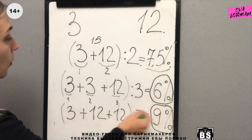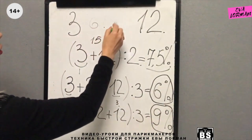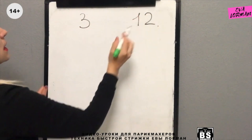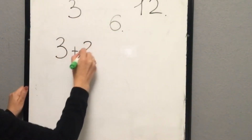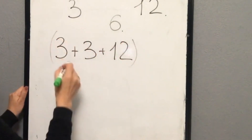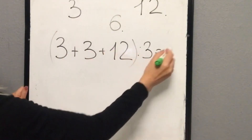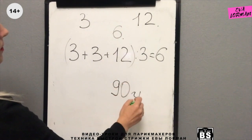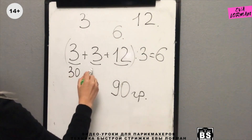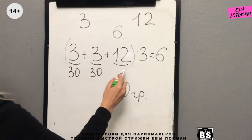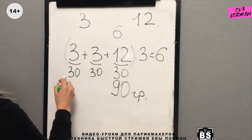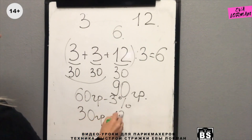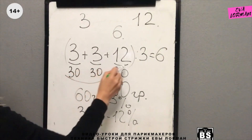This is done when you have run out of 6% and 9% oxides. Now let's see an example. We have 3% and 12% and we need to work at 6%. We take the entire amount needed — for example, 90 grams. That means 60 grams of 3% and 30 grams of 12%. The parts must be the same.